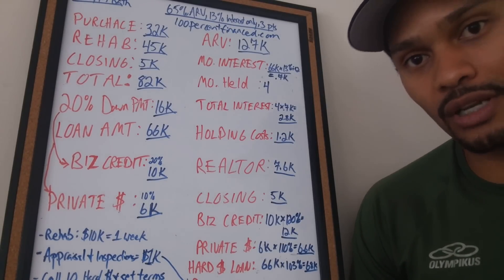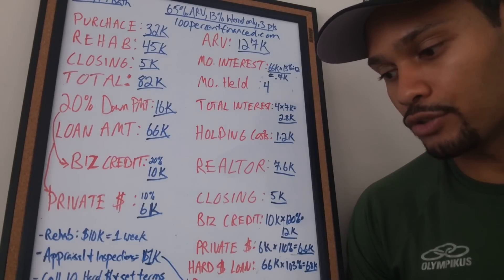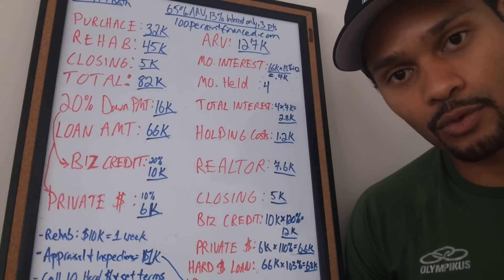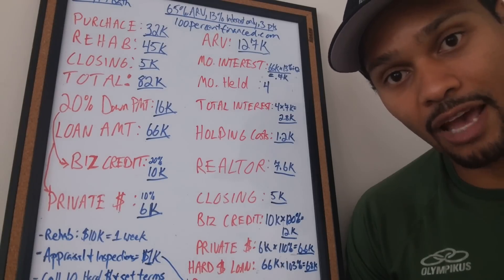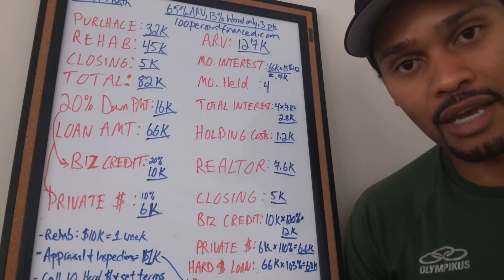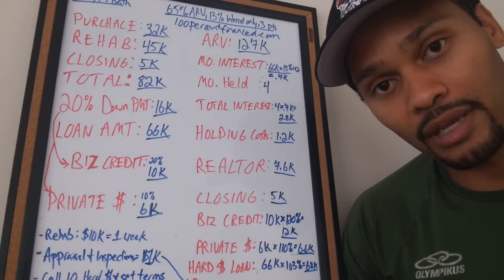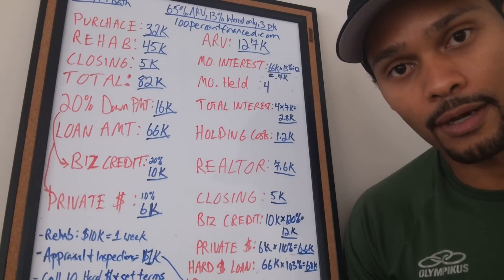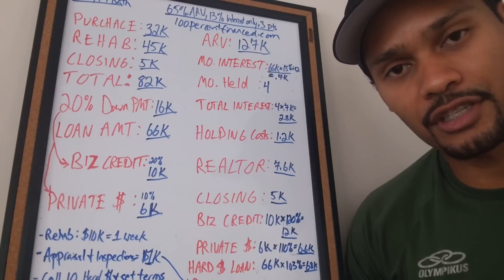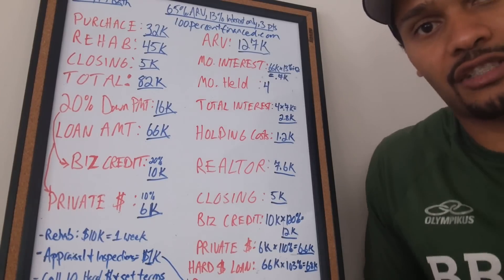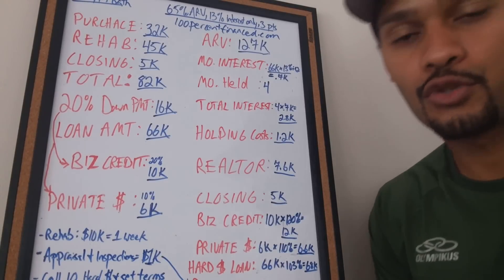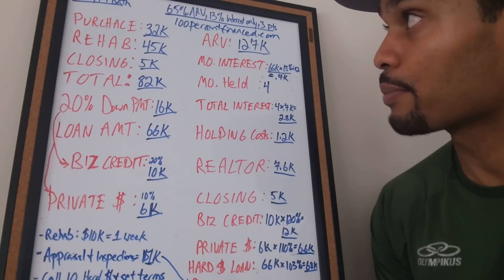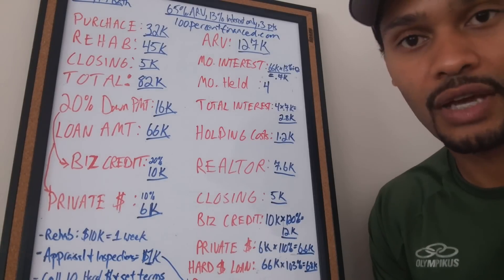Let's talk about the deal. Say it's a three bedroom, one and a half bath, and you want to add value — make it two full baths, convert the master bedroom's half bath to a full bath, expand it into a master suite, add a deck, and add central air since it didn't have it. You want to look for things you can add value to.